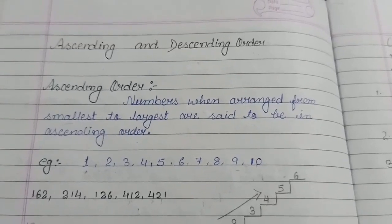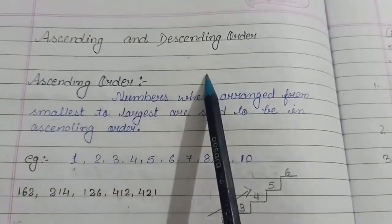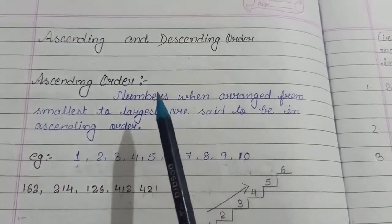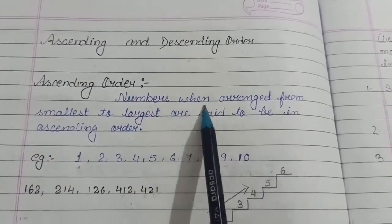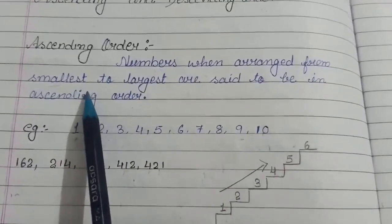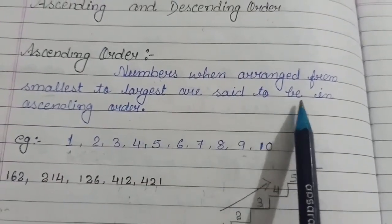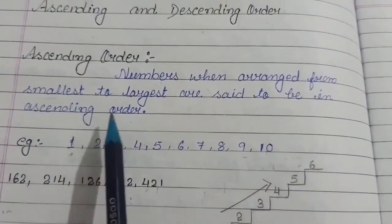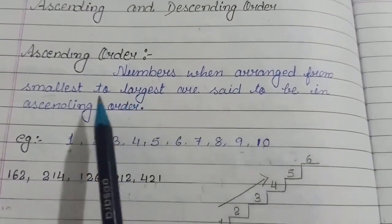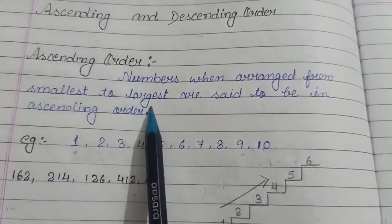Now, let us learn about ascending and descending order. Numbers, when arranged from smallest to largest, are said to be in ascending order. From smallest to largest.